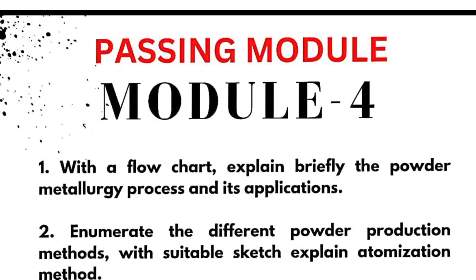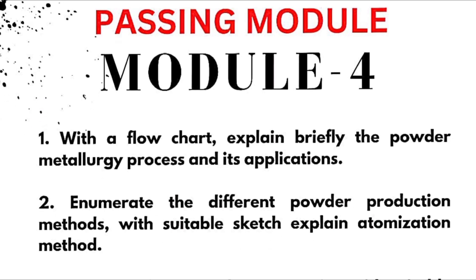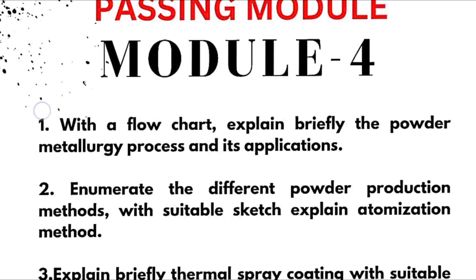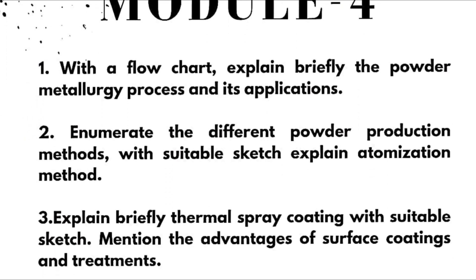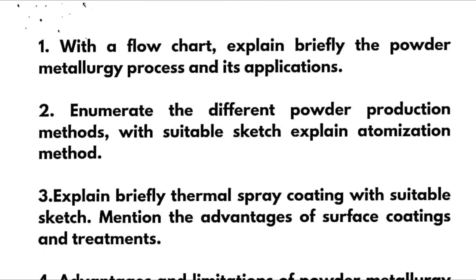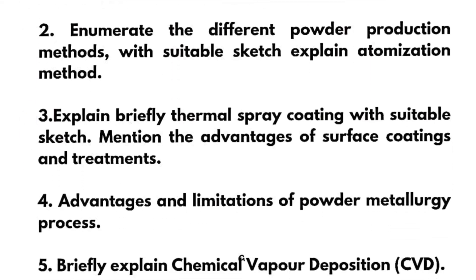Coming to Module 4, which is again a passing module — refer these important questions with a flowchart. First: explain briefly the powder metallurgy process and its applications — super important one. Second: enumerate the different powder production methods with suitable sketches and explain the atomization method.